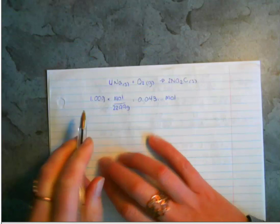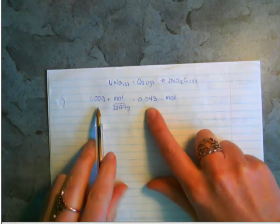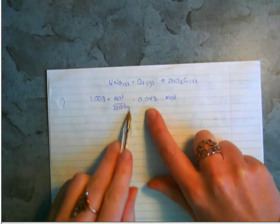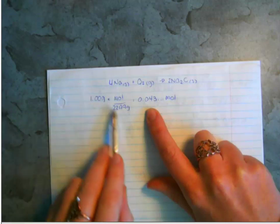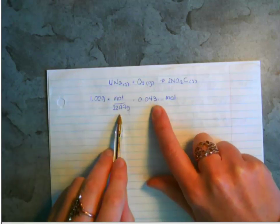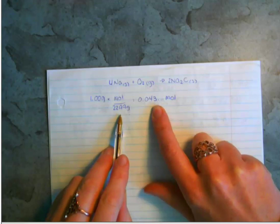Just stopping to think if that makes sense - well, if one mole is 23 grams, then one gram is going to be quite a bit less than one mole, so that number makes sense.